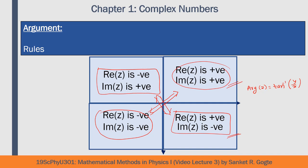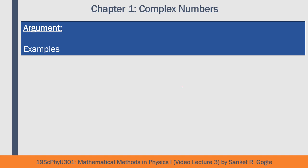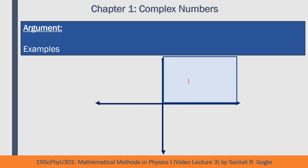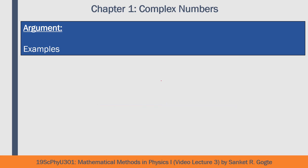Let's consider examples. For z equals 1 plus root-3 times i, the argument is tan inverse of root-3 divided by 1. The calculator gives pi by 3 radians. Since both real and imaginary parts are positive, the angle is in the first quadrant, so the argument is pi by 3 radians. This is confirmed.